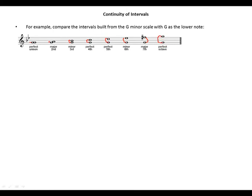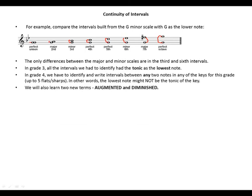The only difference between the major and minor scales are in the third and the sixth intervals. In Grade 3, all the intervals we had to identify had the tonic as the lowest note. In Grade 4 we have to identify and write intervals between any two notes in any of the keys for this grade — up to five flats and sharps. In other words, the lowest note might not be the tonic of the key.